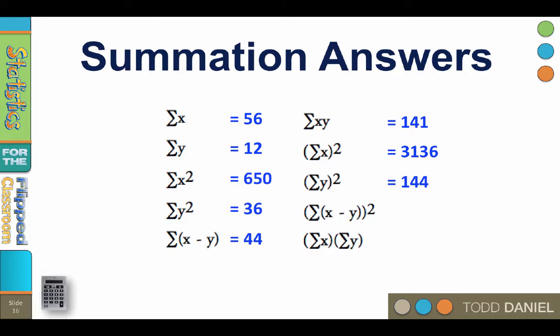Now do the sum of x minus y quantity squared. It is 1936. And finally, calculate the sum of x times the sum of y. 56 times 12 is 672.